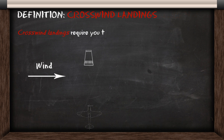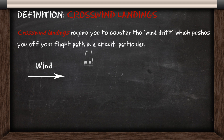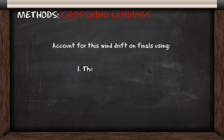Crosswind landings require you to counter the wind drift which pushes you off your flight path in a circuit, particularly on final approach. You can account for this wind drift on finals using either the side slip approach or the crab approach.